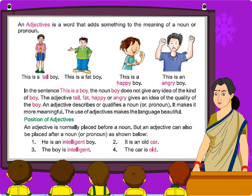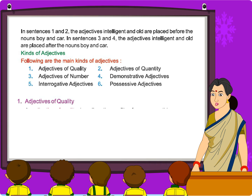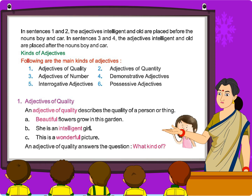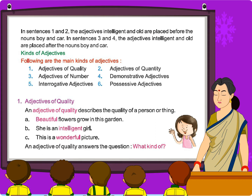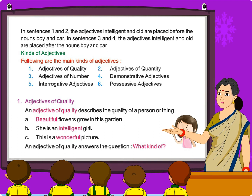Position of Adjectives. An adjective is normally placed before a noun, but an adjective can also be placed after a noun or pronoun. For example: 'He is an intelligent boy.' 'It is an old car.' In sentences 1 and 2, the adjectives intelligent and old are placed before the nouns boy and car. In sentences 3 and 4, the adjectives intelligent and old are placed after the nouns boy and car.